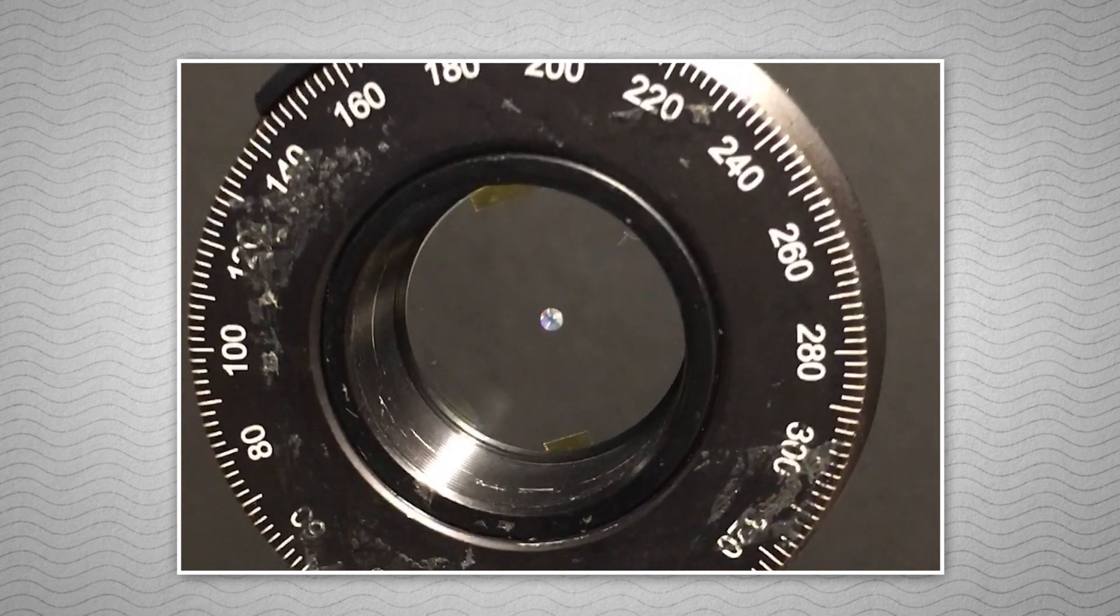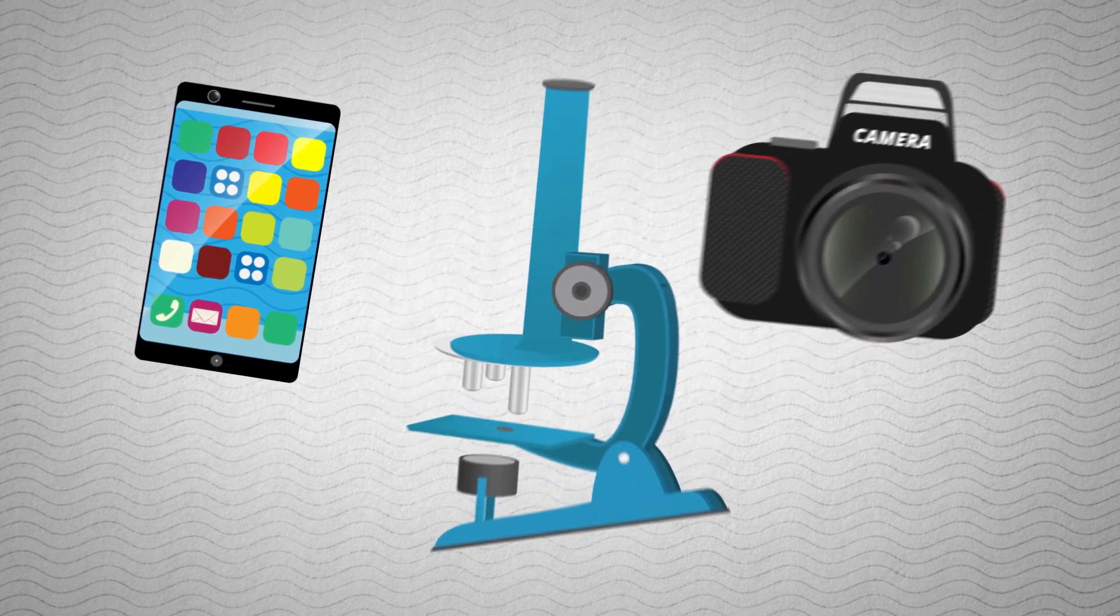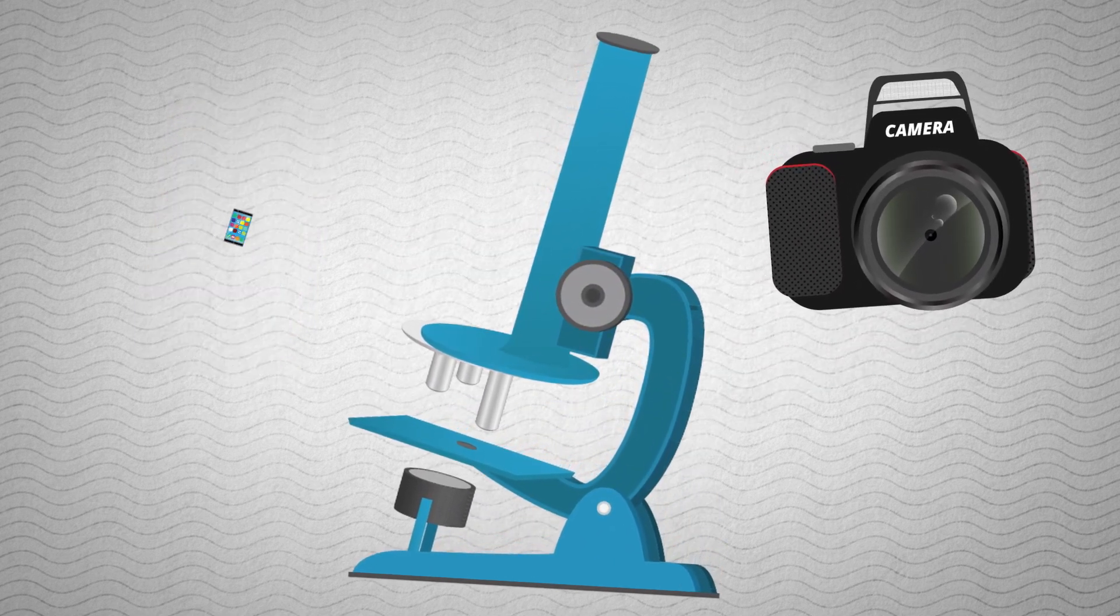Once this happens, these glitter-sized lenses can replace the lens in a smartphone, regular camera, microscope, anywhere a lens might be needed, and the great shrinking can continue.